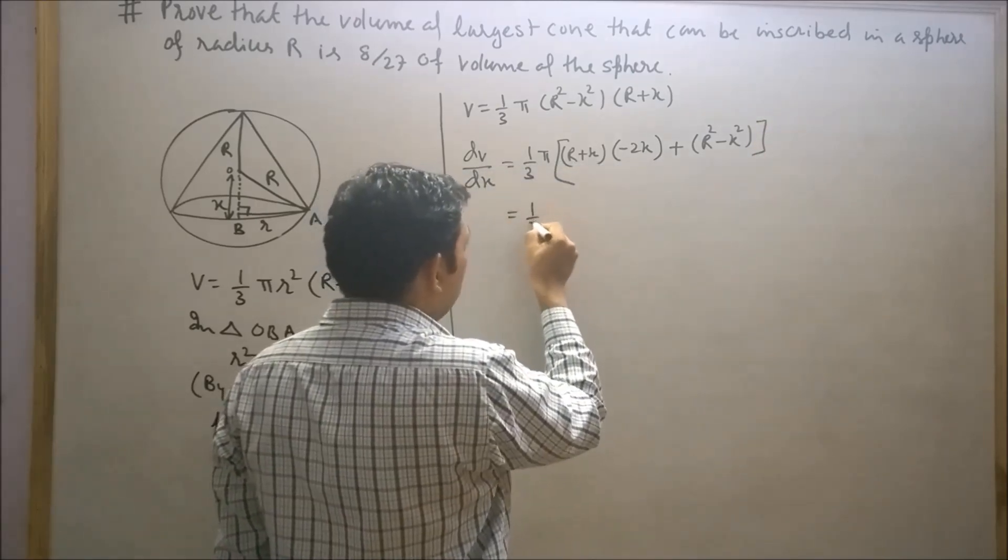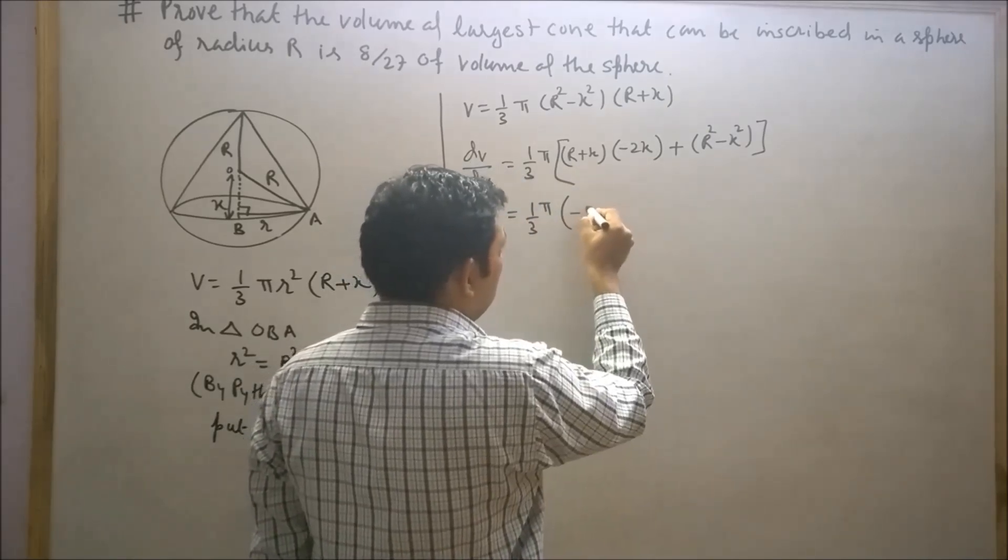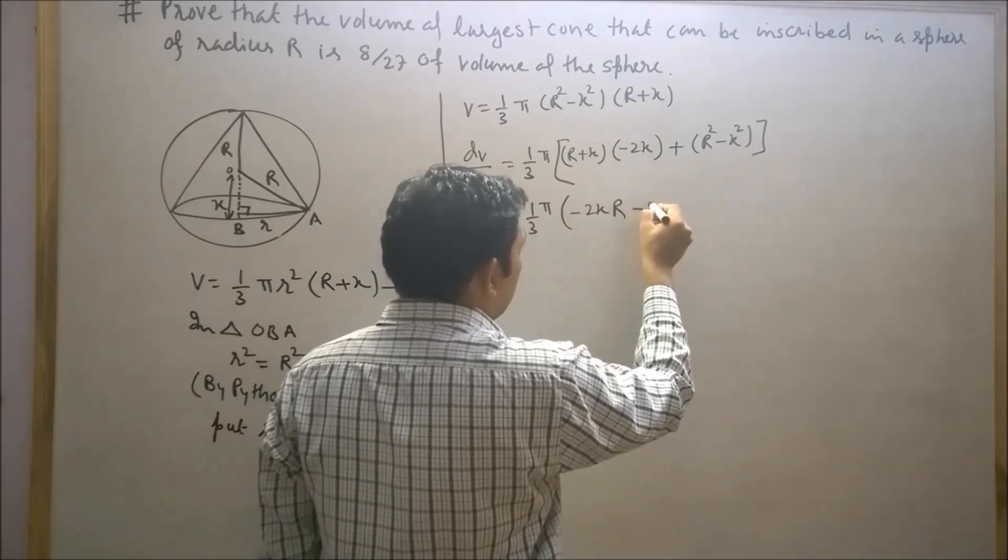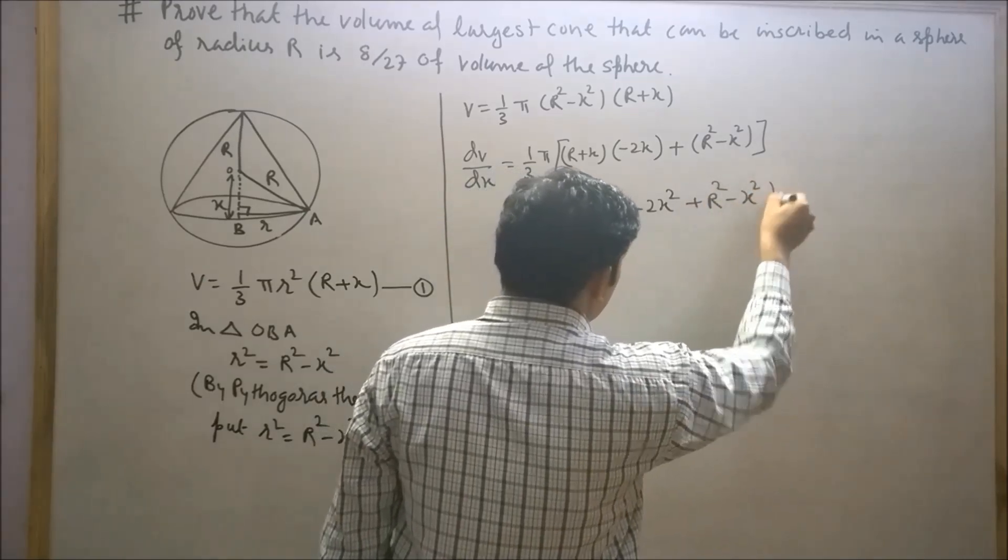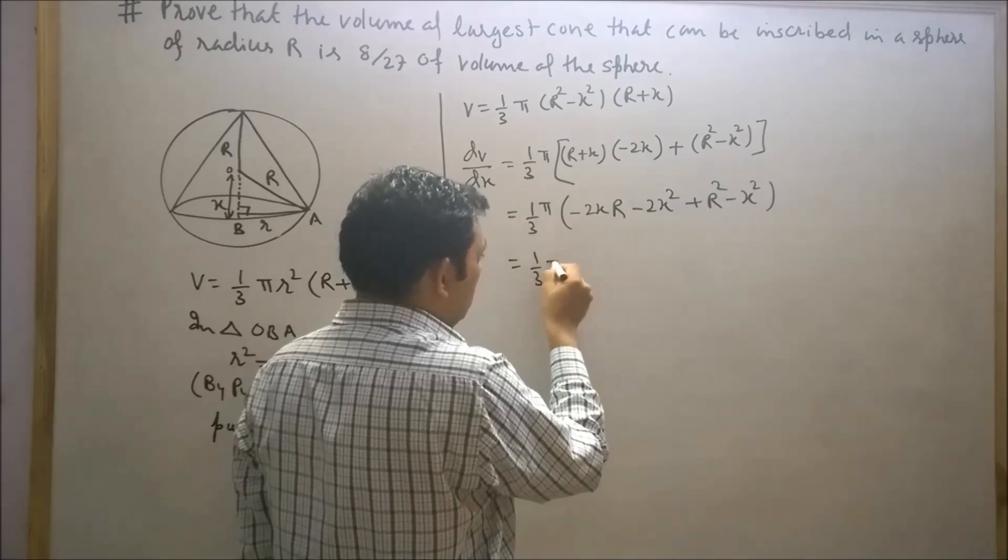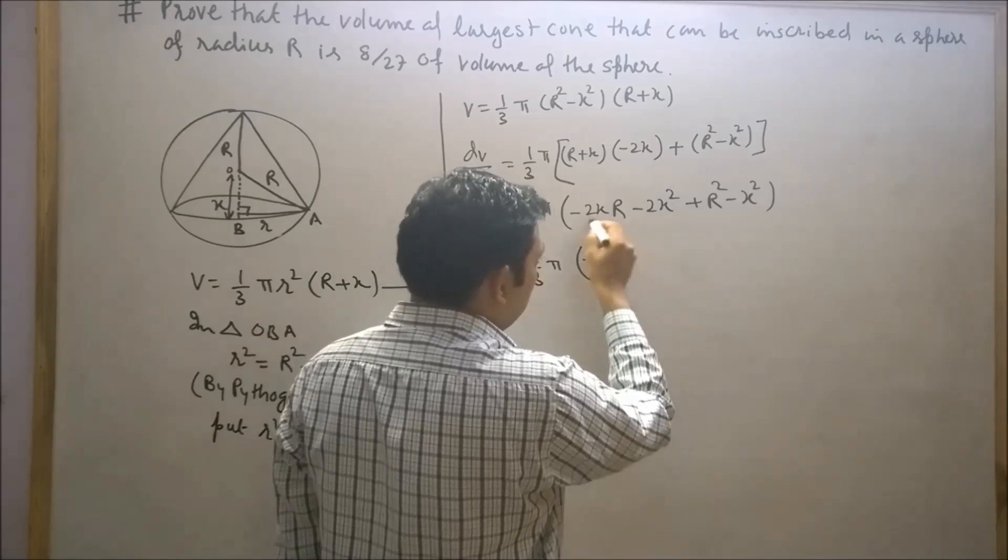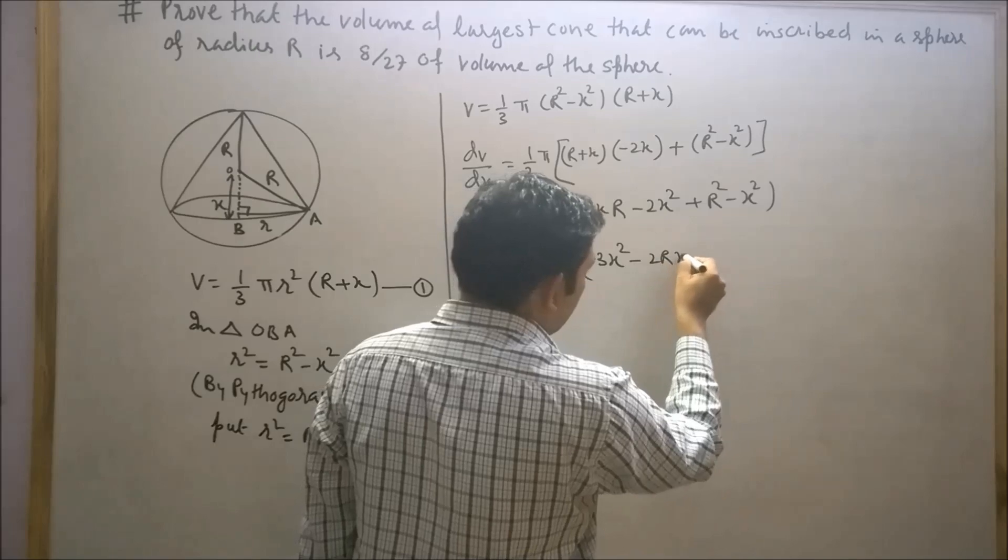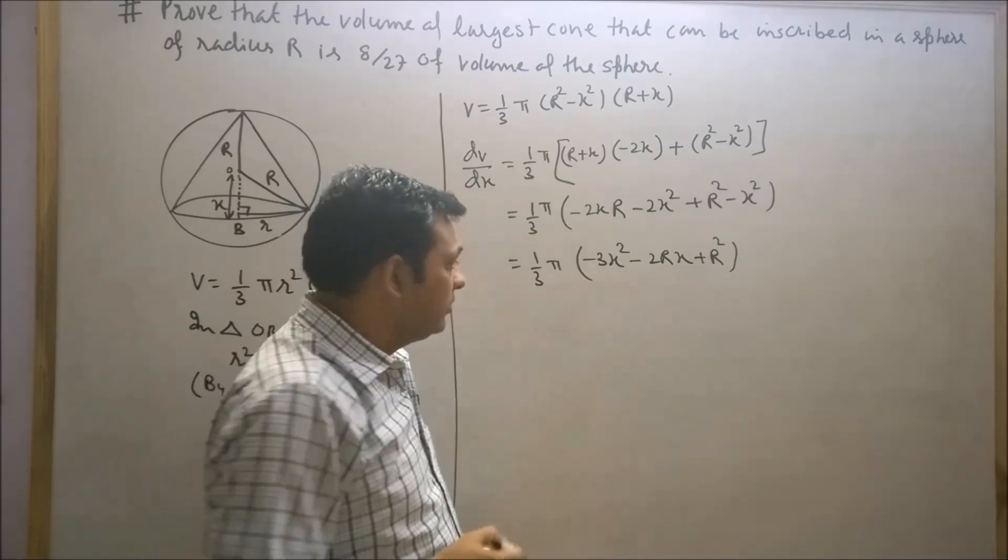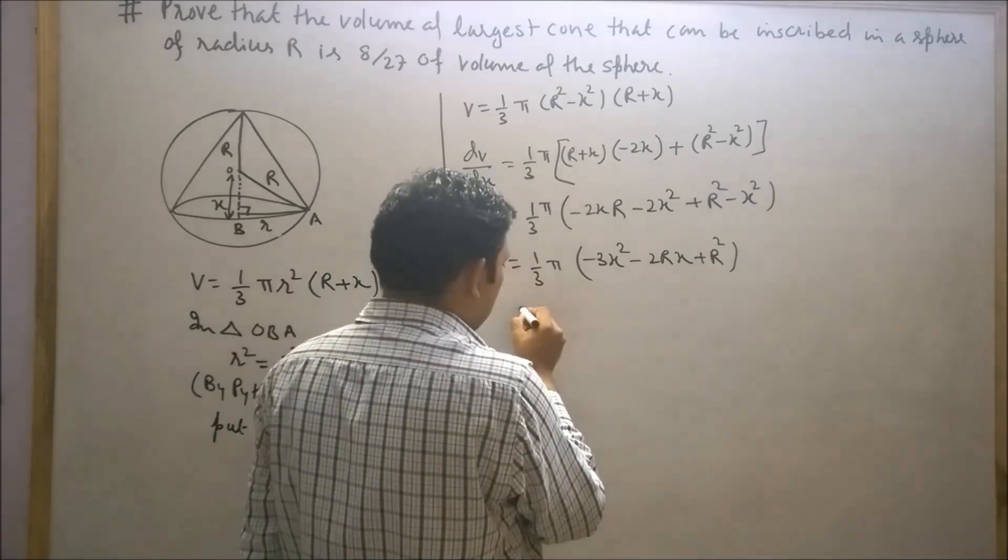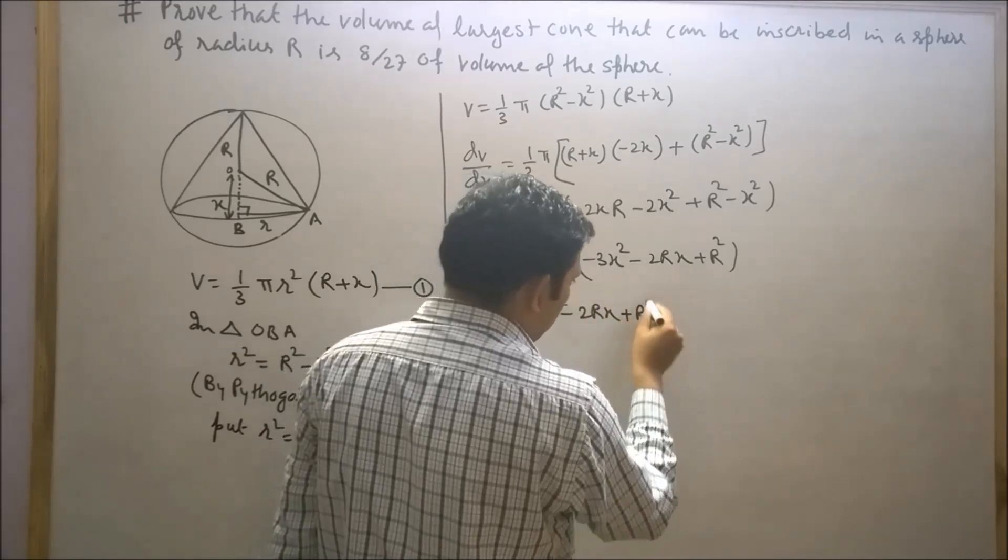This will be 1/3 π times (-2xR - 2x² + R² - x²), which simplifies to -3x² - 2Rx + R². Now try to find the critical point for this equation by setting it equal to zero.